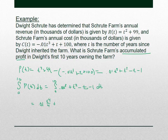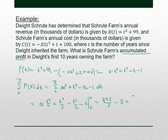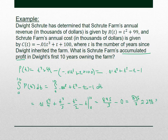Taking the antiderivative: for 0.01T³, the 0.01 comes along for the ride and T³ becomes T⁴/4; plus T² becomes T³/3; minus T becomes −T²/2; and minus 1 becomes −T. Evaluated from 0 to 10, when you plug in 10 you get 895/3, and when you plug in 0 you get 0. So the total profit is 895/3, which is exactly 298 and 1/3, approximately 298.333.